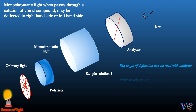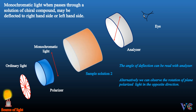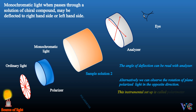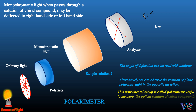Alternatively, we can observe the rotation of plane polarized light in the opposite direction. This instrumental setup is called a polarimeter, useful to measure the optical rotation of chiral compounds.